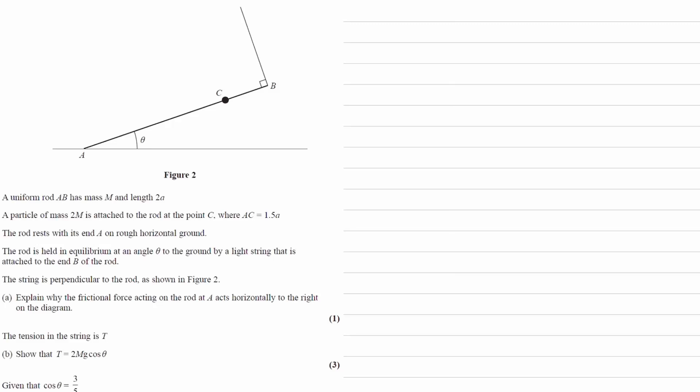Let's start this question by drawing a force diagram. We have a uniform rod AB of mass 2m. The rod has a length of 2a, so the weight force acts in the middle of the rod, and the weight force is mg. We then have a particle of mass 2m attached to the rod at point C, where AC is equal to 1.5a. That's 2mg.